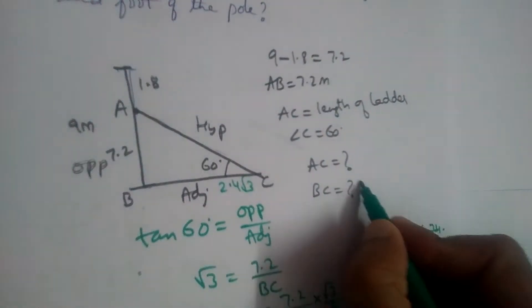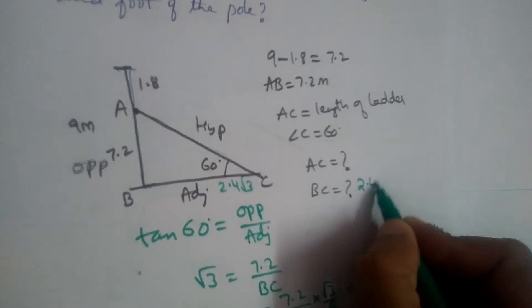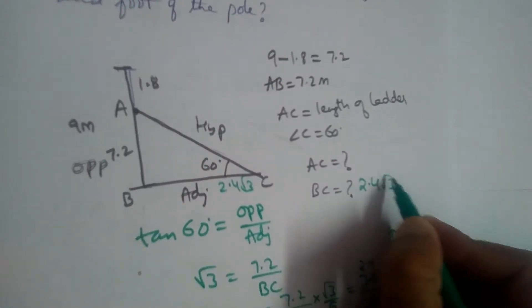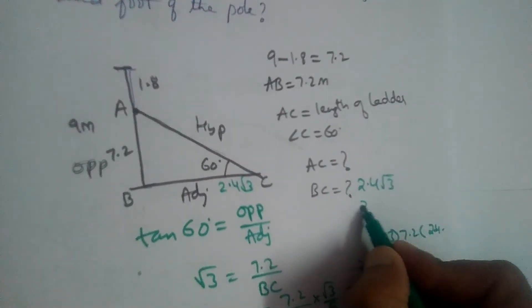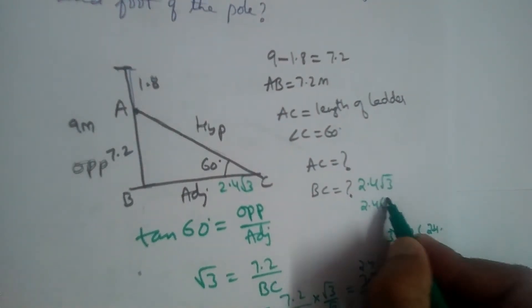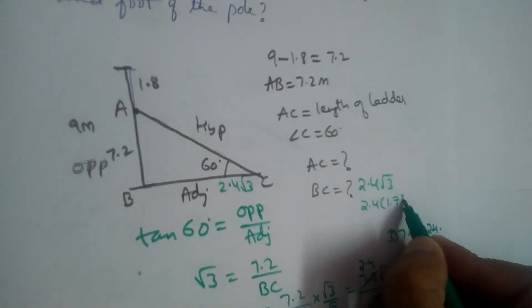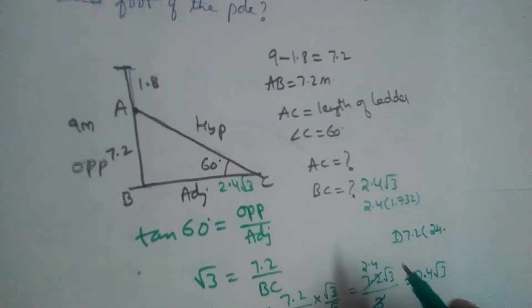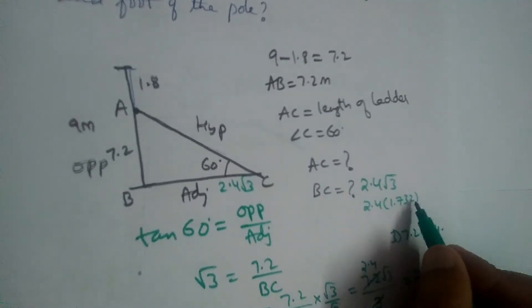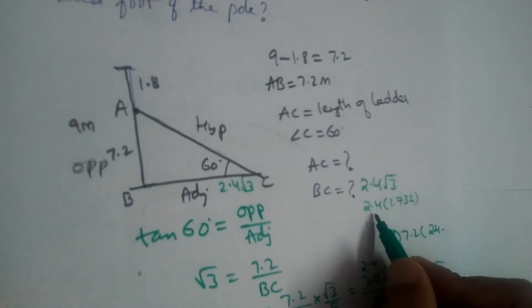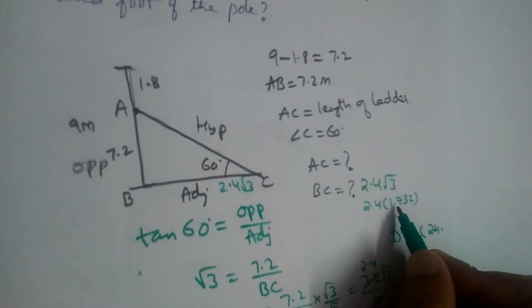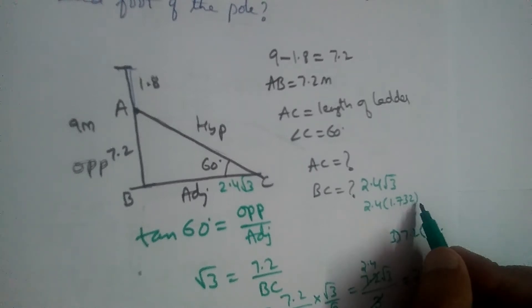BC is 2.4√3. If you want to substitute the value of √3, you can use 1.732 and multiply: 2.4 × 1.732.